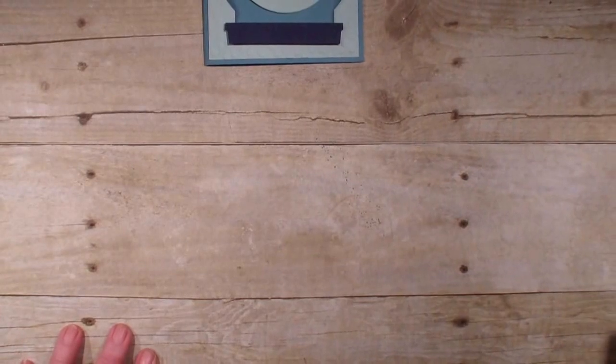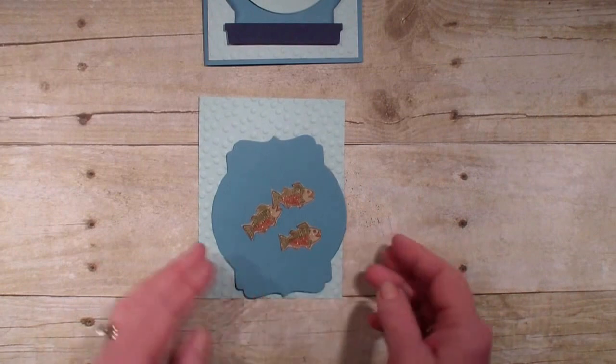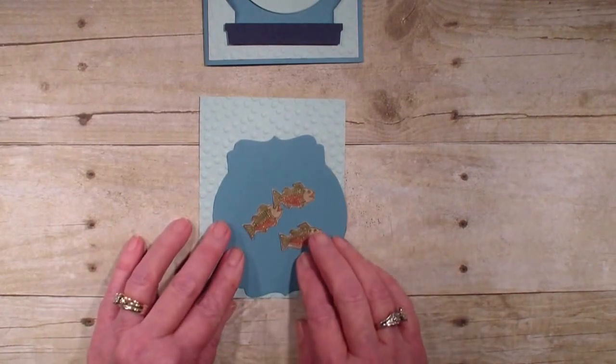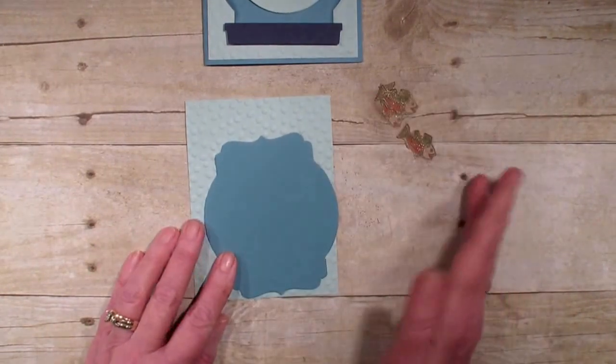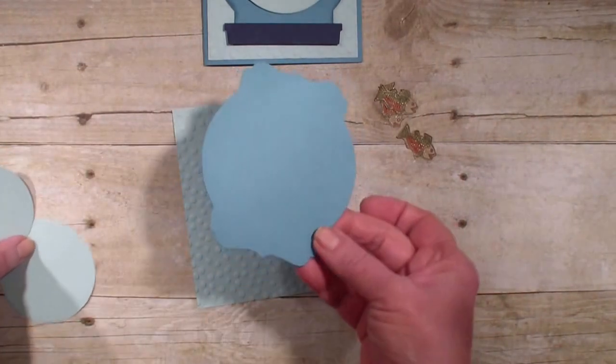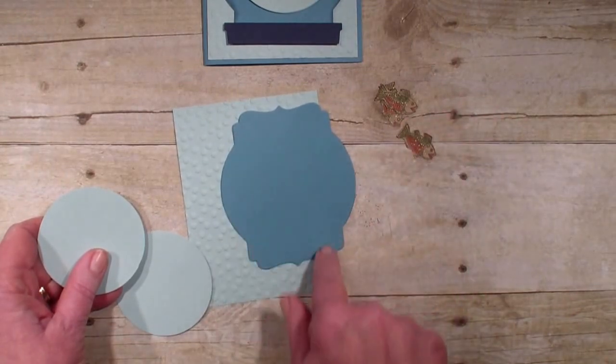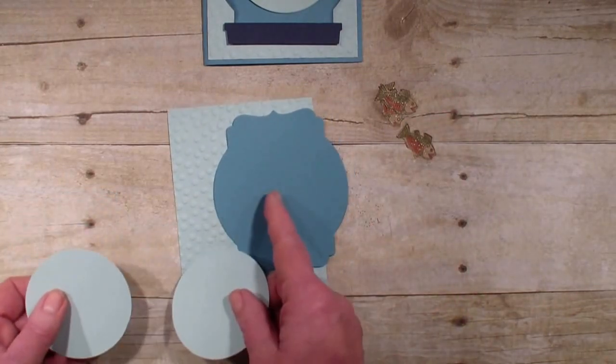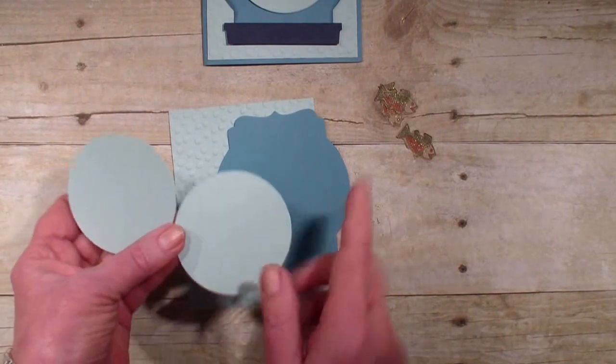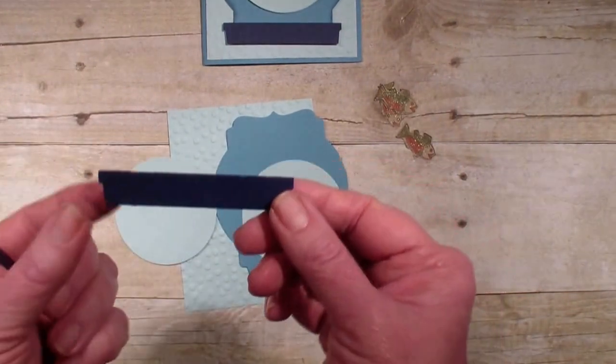What I used was the Bear Hug stamps and framelits, and I did the three little fish. I used Old Olive and Calypso Coral to color them in. I used the deco label framelit and cut that out of Marina Mist, and this is Pool Party—two circles out of the Pool Party and two of the little window edges.